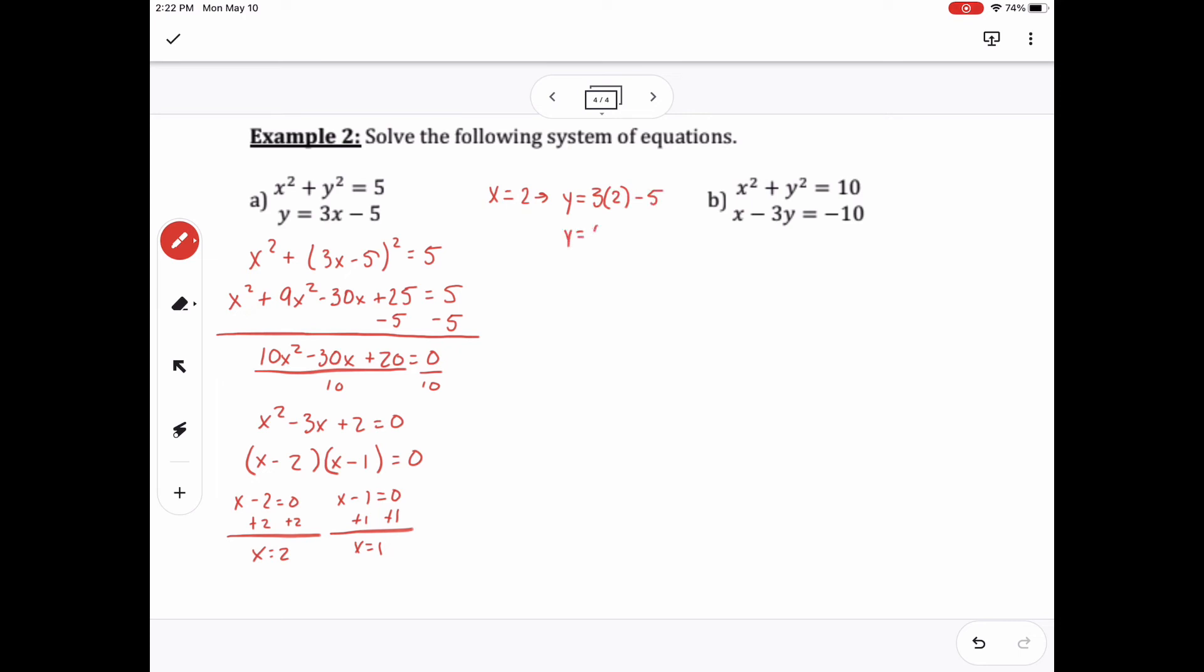So when I plug in 2, I get the value of 1, so I have the ordered pair 2 comma 1. When I plug in 1 for my x value, I get the value of negative 2. So then my other ordered pair would be 1 comma negative 2. And those are my two answers.